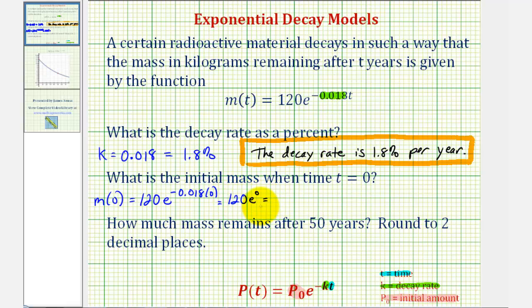Anything to the zero power is equal to one, so this is just 120. So the initial mass is 120 kilograms.